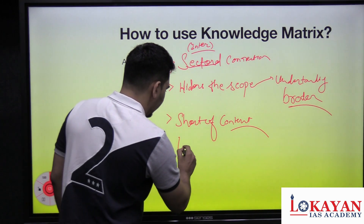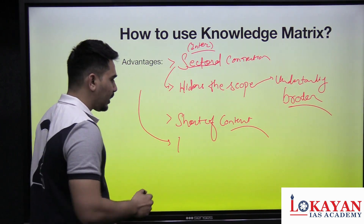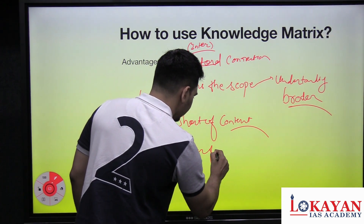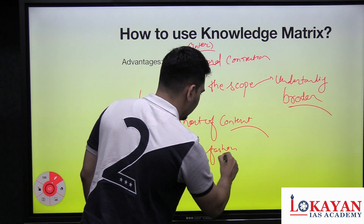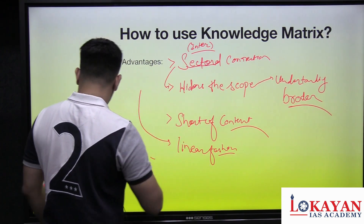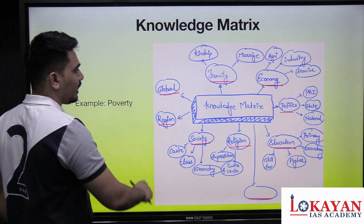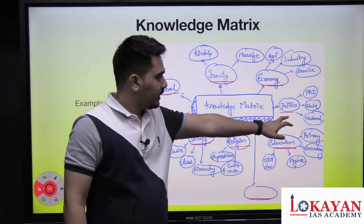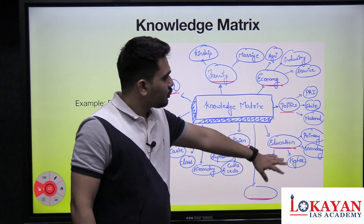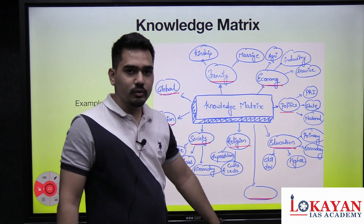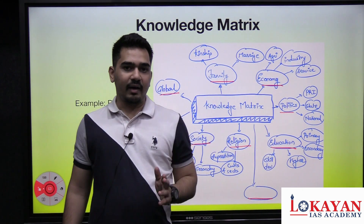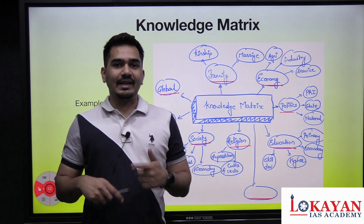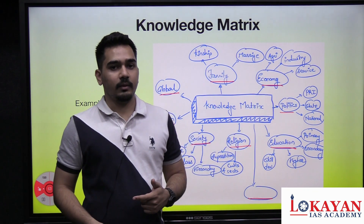You take a parameter, apply the framework, and if you can come up with an example to substantiate your argument — excellent. If you can't, you move on without going in circles. This also helps you arrange your ideas in a linear fashion. Even if the sequence of economy, politics, and education varies, because you have that mental clarity of what you want to write, that clarity will be reflected in your essay as well.